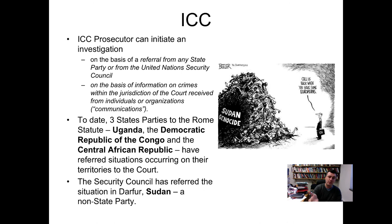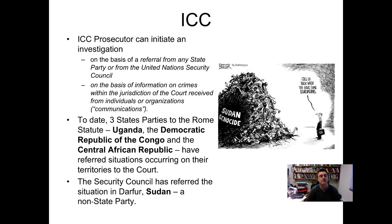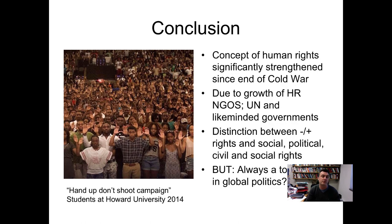We have three state parties in the Rome Statute — Uganda, the DRC, and the Central African Republic — which have all referred situations occurring on their territories to the court, largely because they lack the resources to deal with them. The UN Security Council can also refer a situation: looking at Darfur in Sudan — a non-state party — those considered responsible for the genocide have been referred to the ICC.